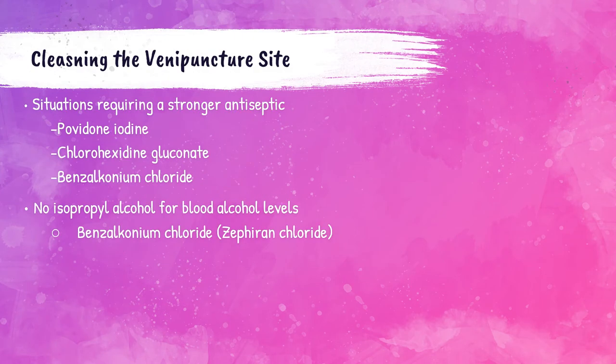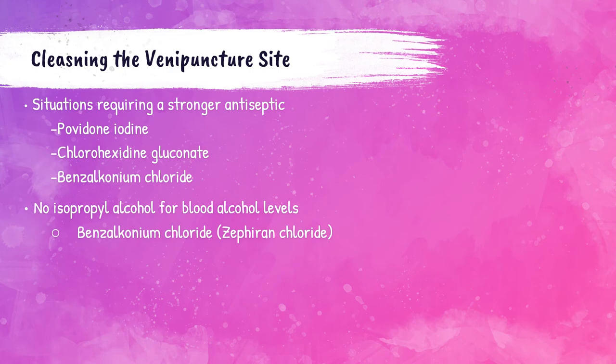Isopropyl alcohol is used for cleansing routine venipuncture sites, but must not be used for collecting samples for blood alcohol levels, as putting alcohol on the skin will negatively impact the test result. For blood culture samples, a stronger antiseptic is needed than regular isopropyl alcohol to prevent contamination of skin bacteria into the culture bottles. Chlorhexidine gluconate, povidone-iodine, and benzalkonium chloride can be used for cleansing puncture sites when drawing blood culture bottles.